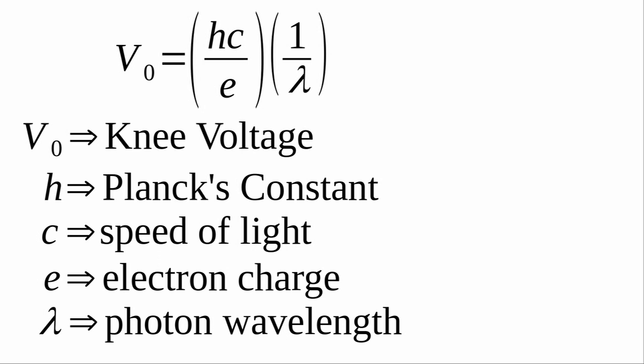If we set these two equations equal to each other and do a little bit of algebra, we obtain this equation. This looks suspiciously like an equation from high school, the equation for a line, if b were set to zero.